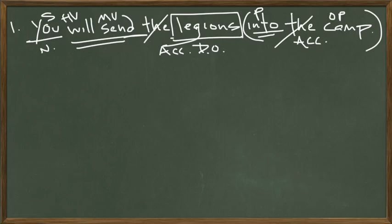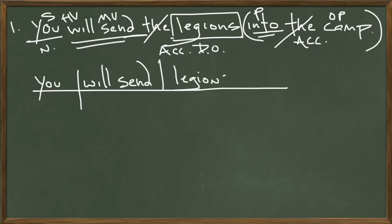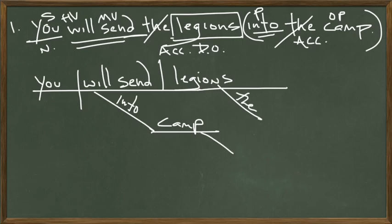Let's diagram this and then we'll translate it into Latin. We always start with the main line and divide it. 'You' goes on the subject side, 'will send' goes on the verb side — there's our basic sentence. Direct objects also go on the main line after a straight stick. So: you will send legions. Where are you going to send the legions? Into camp — because this answers the question where, that's an adverbial question, so we put it underneath the verb. You will send the legions into the camp.